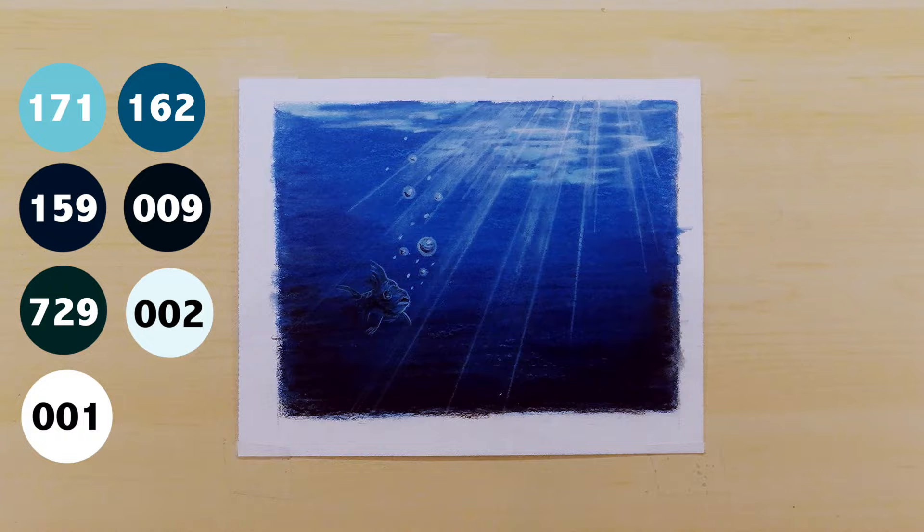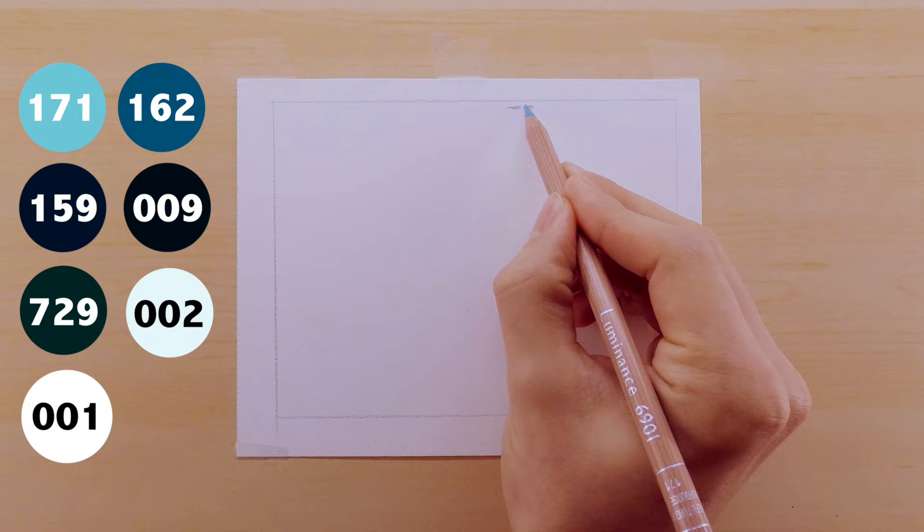So let's get started. To start off this piece, I drew a square just to kind of box in the piece in general to give it a nice order.